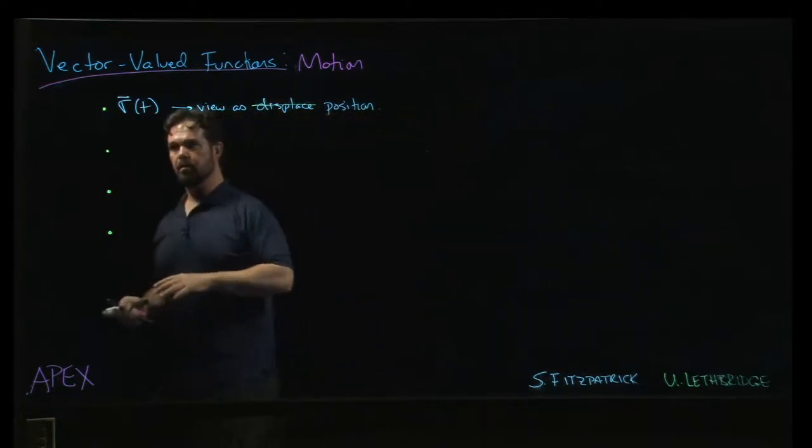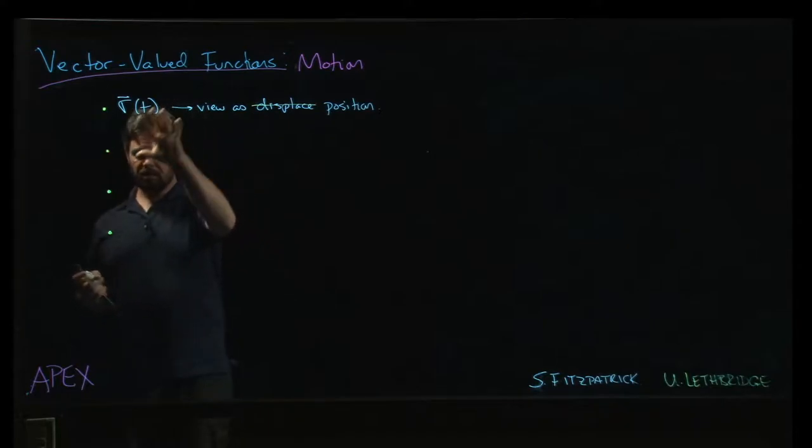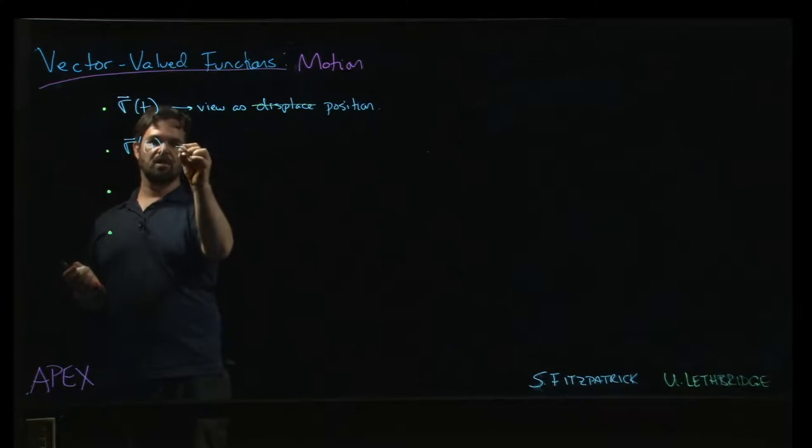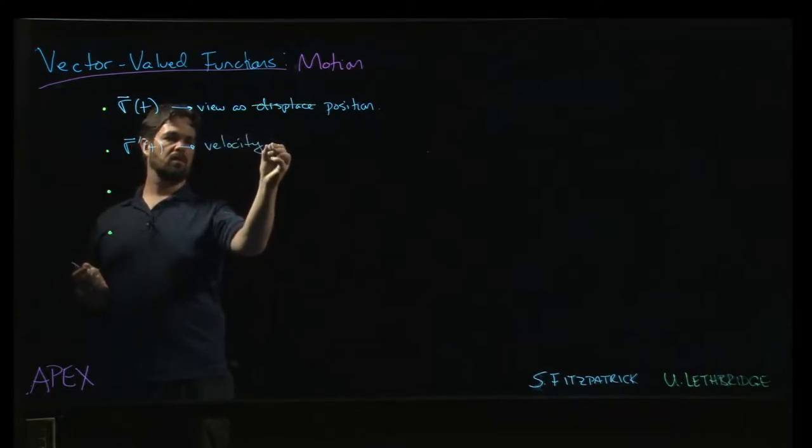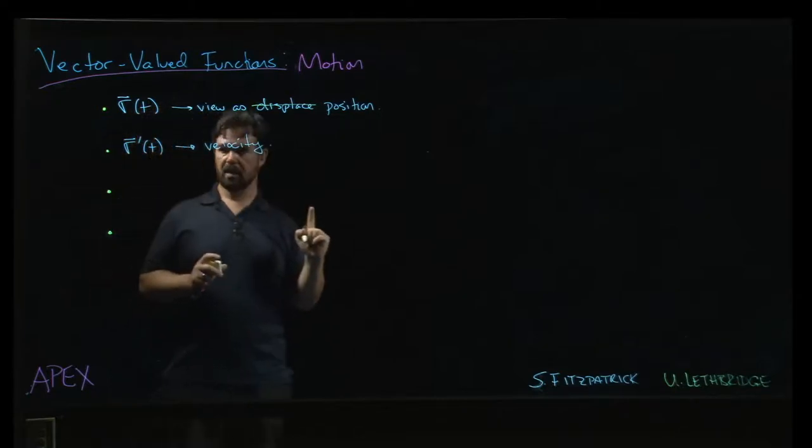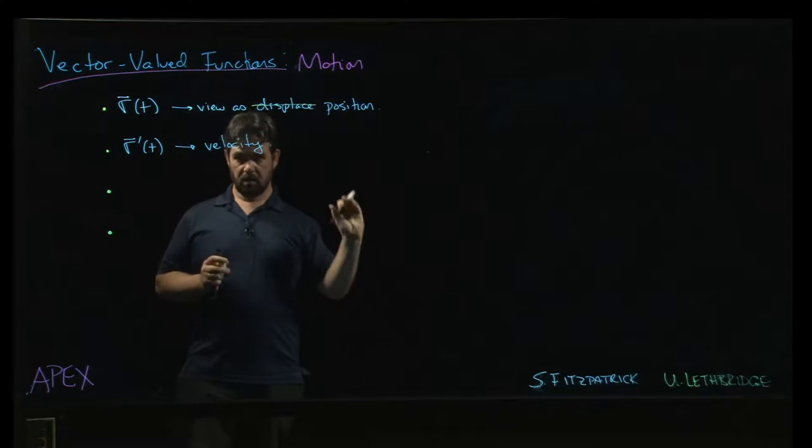Well, if the original function r(t), if that's our position, what happens when we take the derivative of position? As usual, the derivative of position should give us velocity. And notice this is a vector quantity—it has a magnitude and a direction.